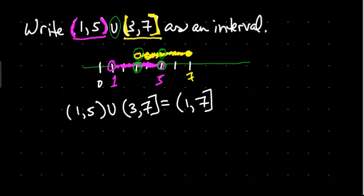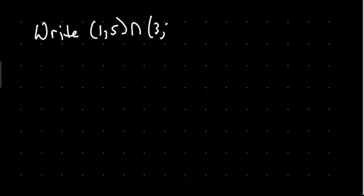So let's write (1,5) intersected with (3,7] as an interval.